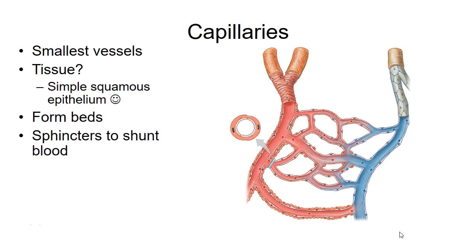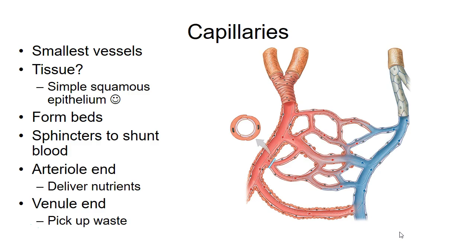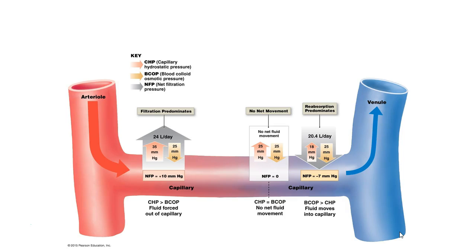So we've talked about capillary beds and their sphincters to shunt blood — kind of like regulating off-ramps. The arterial end delivers nutrients, and then the venous end takes up waste products and metabolites from the surrounding tissue. We call this the arterial end and the venous end.